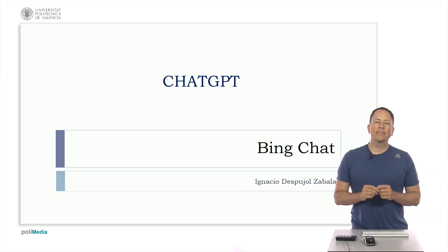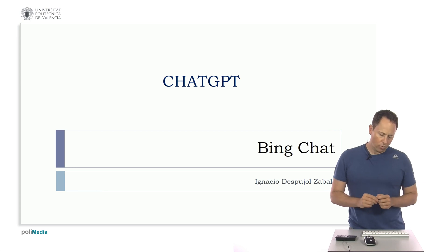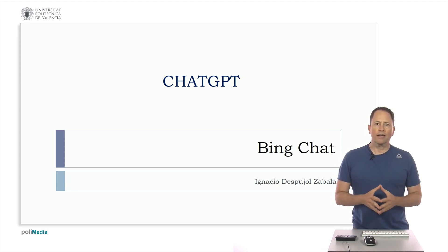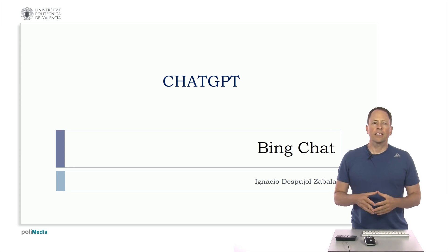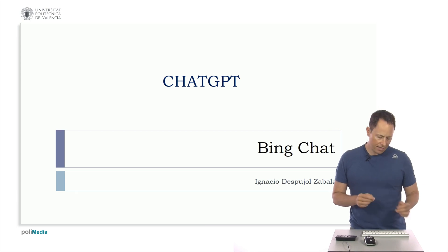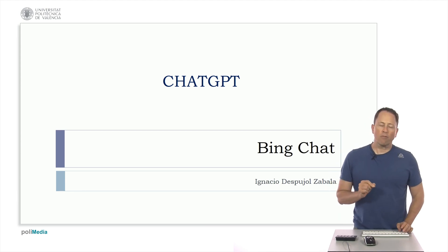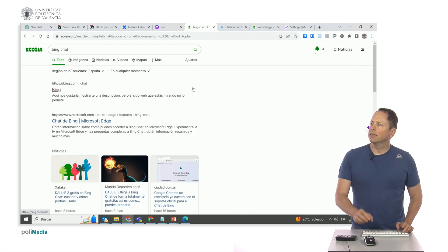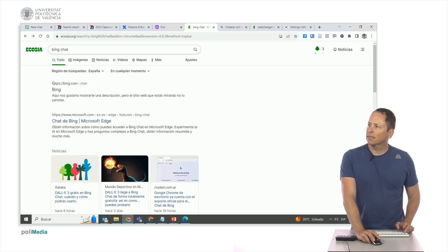In this video, I'm going to talk about Bing Chat because Microsoft has played a significant role in ChatGPT's development, providing substantial financial support to OpenAI. As a result, ChatGPT has been integrated into Bing. Notice that here I have put Bing Chat and I have bing.com/chat open here.